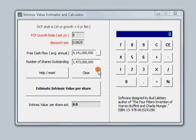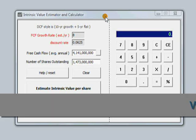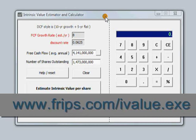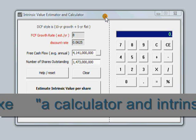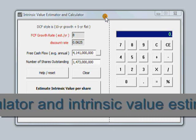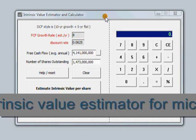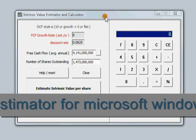This is the intrinsic value estimator calculator that I built, and you can download it from the website www.frips.com, that is F-R-I-P-S dot C-O-M, forward slash I-V-A-L-U-E dot E-X-E.